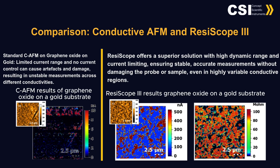Resoscope 3 offers significant advantages. As you can see in the sample scan results of graphene oxide on a gold substrate, CAFM can produce artifacts and potentially damage samples due to its limited current control. Resoscope 3, however, features a high dynamic range and current limiting, ensuring precise and stable measurements.